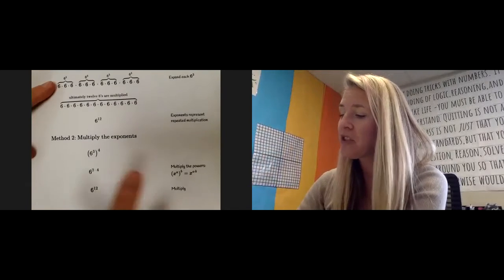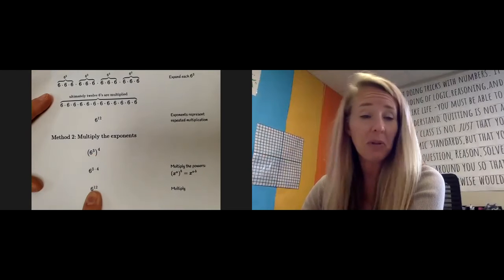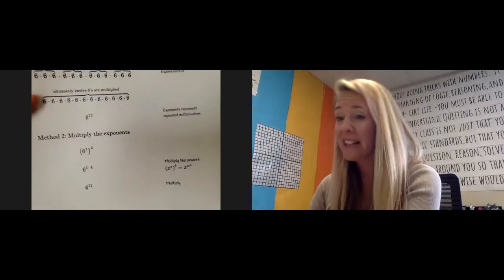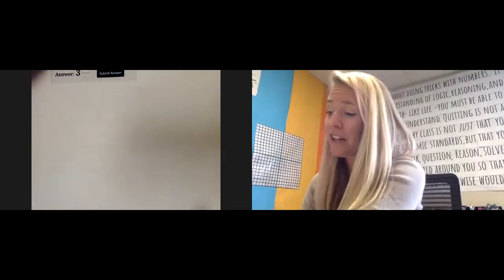The second way to do it is just to say, okay, yeah, if I have a group of a group or a power of a power, I just multiply those. That's my shortcut. And I get 12. So that's the faster way. There's nothing wrong with the faster way, as long as you can get it right.